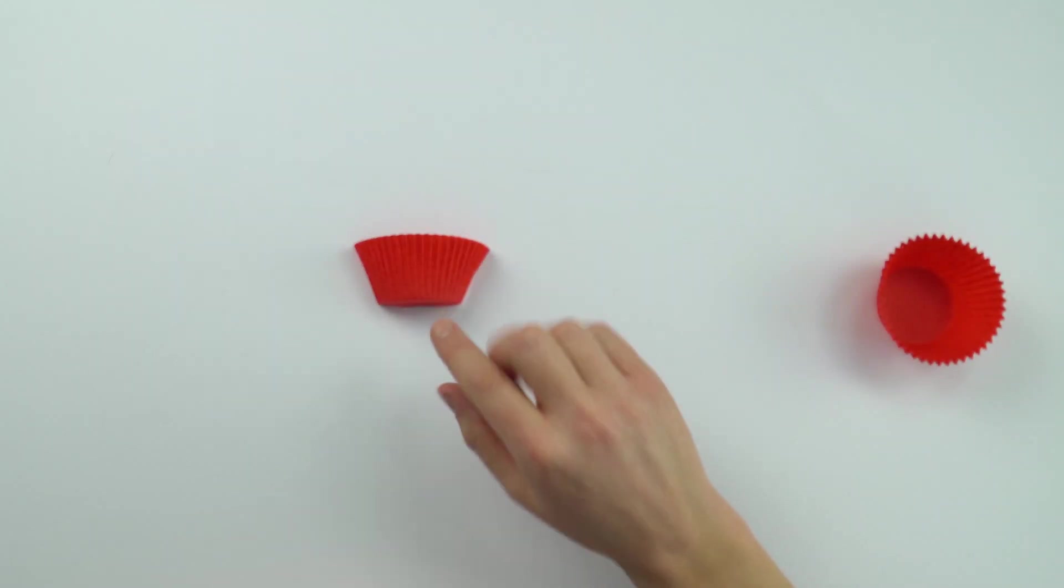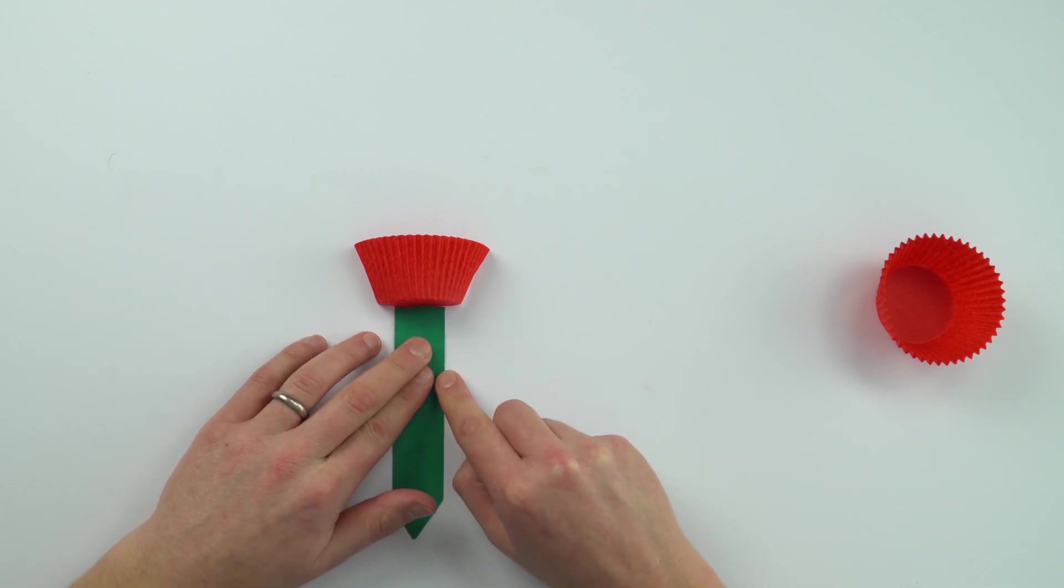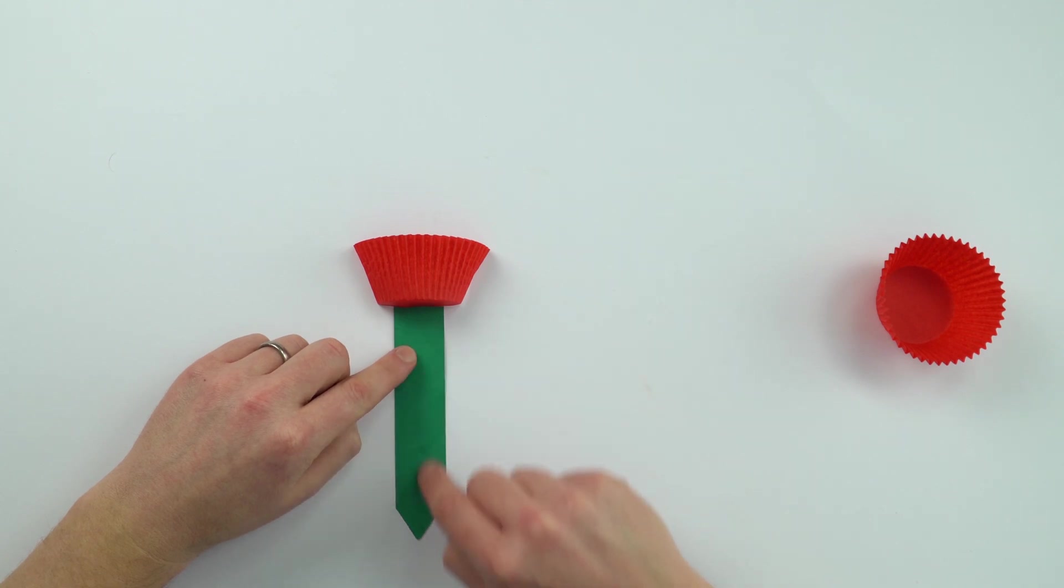This is a side view of that cupcake case. There's going to be a constant force acting downwards due to its weight. It doesn't matter if it's moving or still, it's going to have the same downward force.